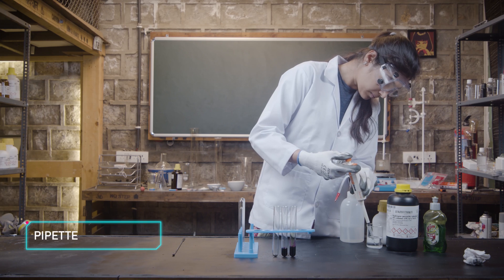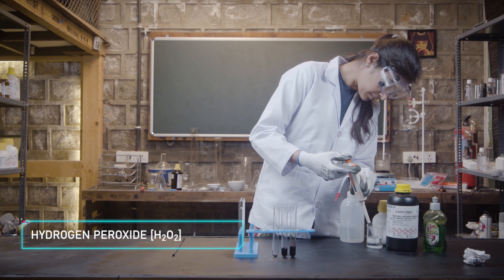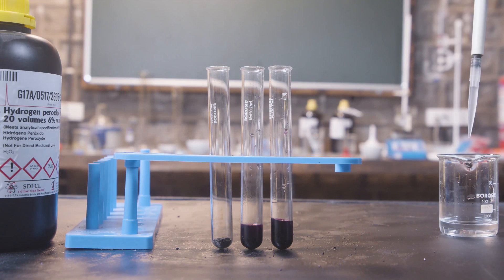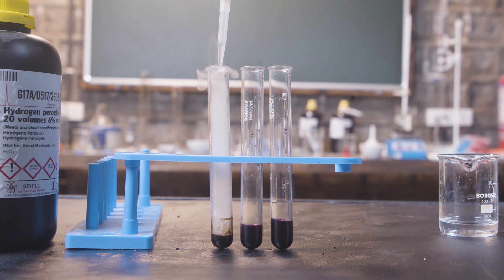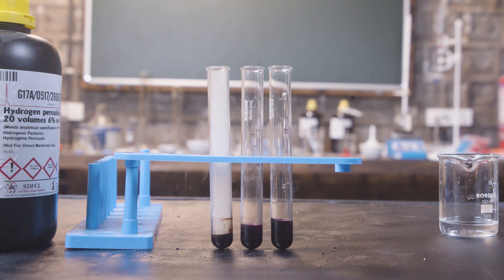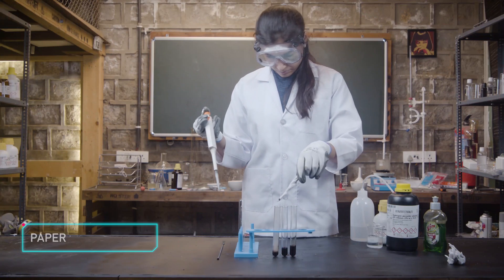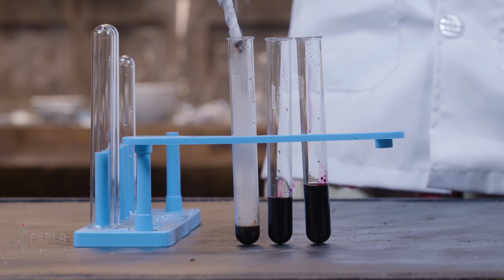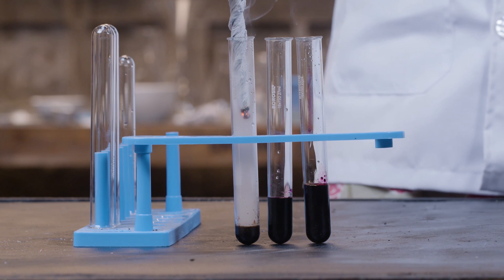Next, take your pipette and pour in some hydrogen peroxide into the first test tube that has just potassium permanganate. Do you see how that vapor rises right up? Now roll up a paper, light it up and insert it into the same test tube.